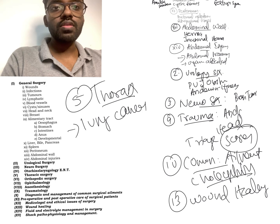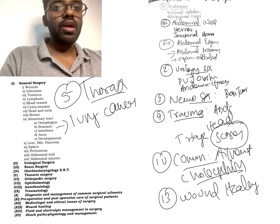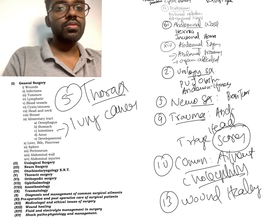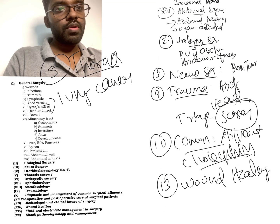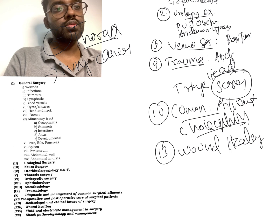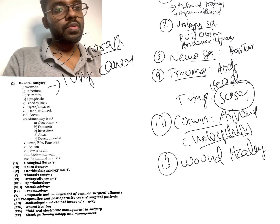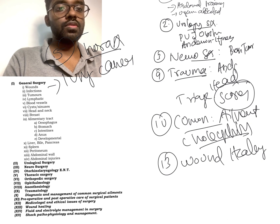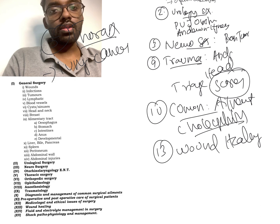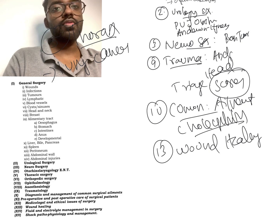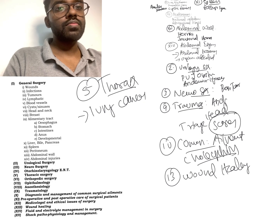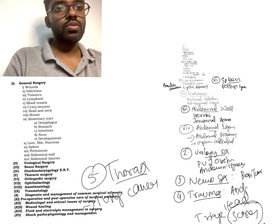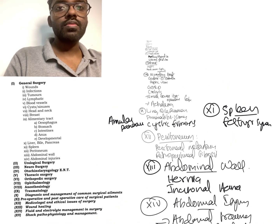From the fifth topic, thorax, they asked about lung cancer. From the tenth topic, common ailments, they asked about cholecystitis — especially the Tokyo Guidelines — but anything can be expected, including appendicitis. The last topic, number thirteen, wound healing, is a must-know topic for every exam. If you've gone through the last five years of questions, you'll already know how important wound healing is. Go through these topics and revise them very well — thank you.